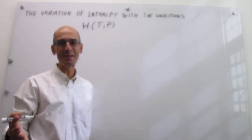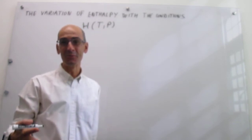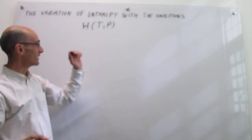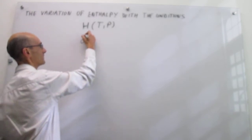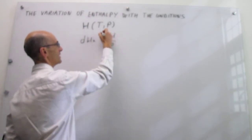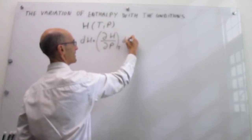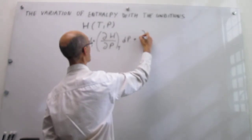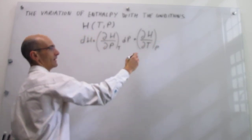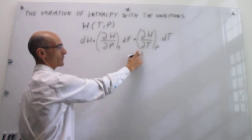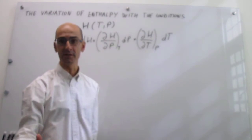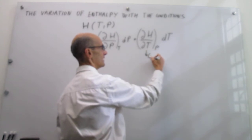Every time that we study the dependence of a function and its variables, we take first derivatives. Let's examine what the total derivative of the enthalpy will look like. You are going to have first derivatives with respect to both variables — the derivative with respect to pressure at constant temperature, and the first derivative of the enthalpy with respect to temperature at constant pressure. This second one we are familiar with: that is the heat capacity at constant pressure, Cp.